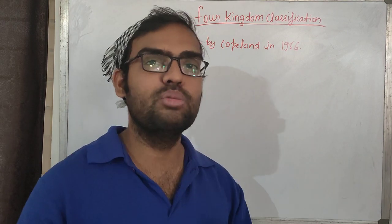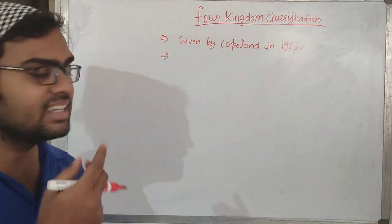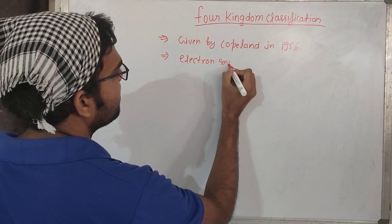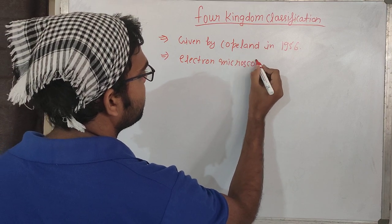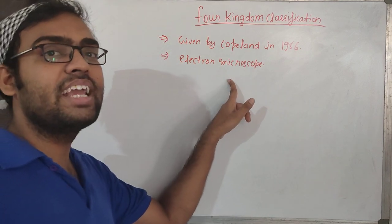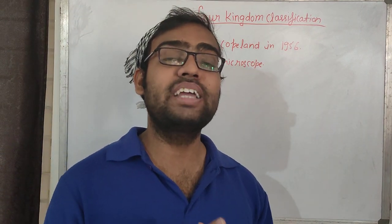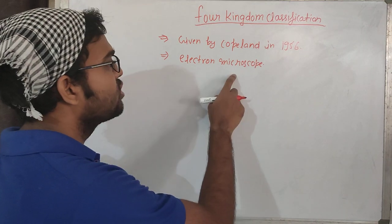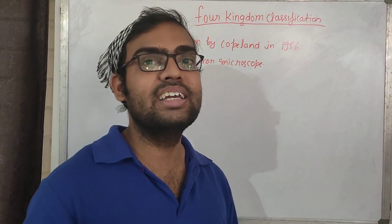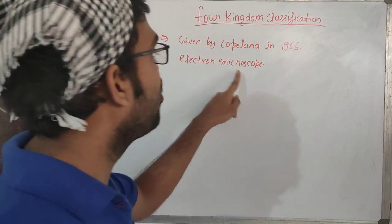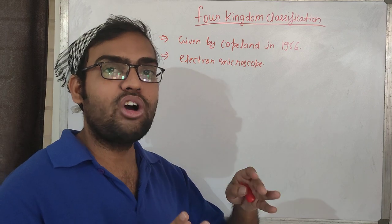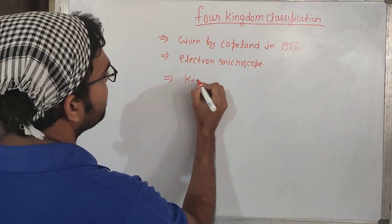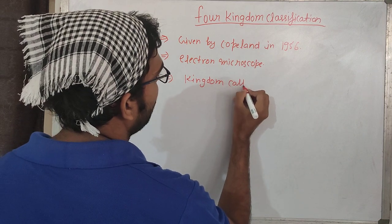As time passed, there was a discovery of the electron microscope. With the help of the electron microscope, we can see very small molecules and microorganisms — like bacteria, viruses, and the mycelium of fungi — which we can't see with the naked eye. With this discovery, Copeland included one more group, a new kingdom called Monera.